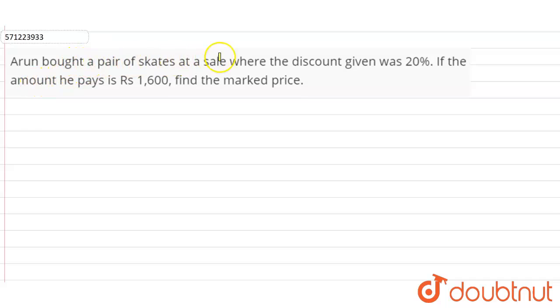Arun bought a pair of skates at a sale where the discount given was 20 percent. If the amount he pays is rupees 1600, find the market price. So in this question we have to find the market price.